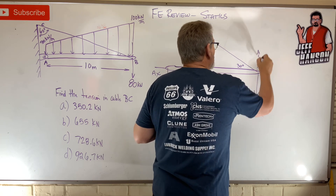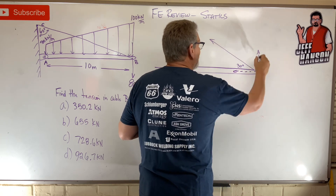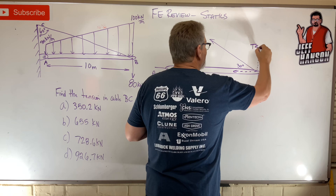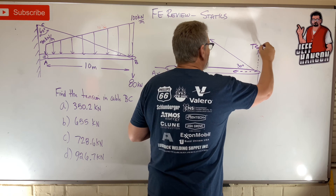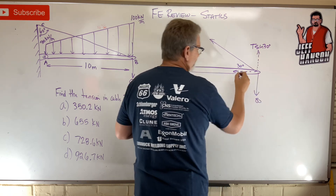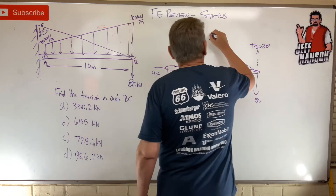So the tension T has two components. This one right here is T times sine 30, and that one is T cos 30, but I don't think I need that one.